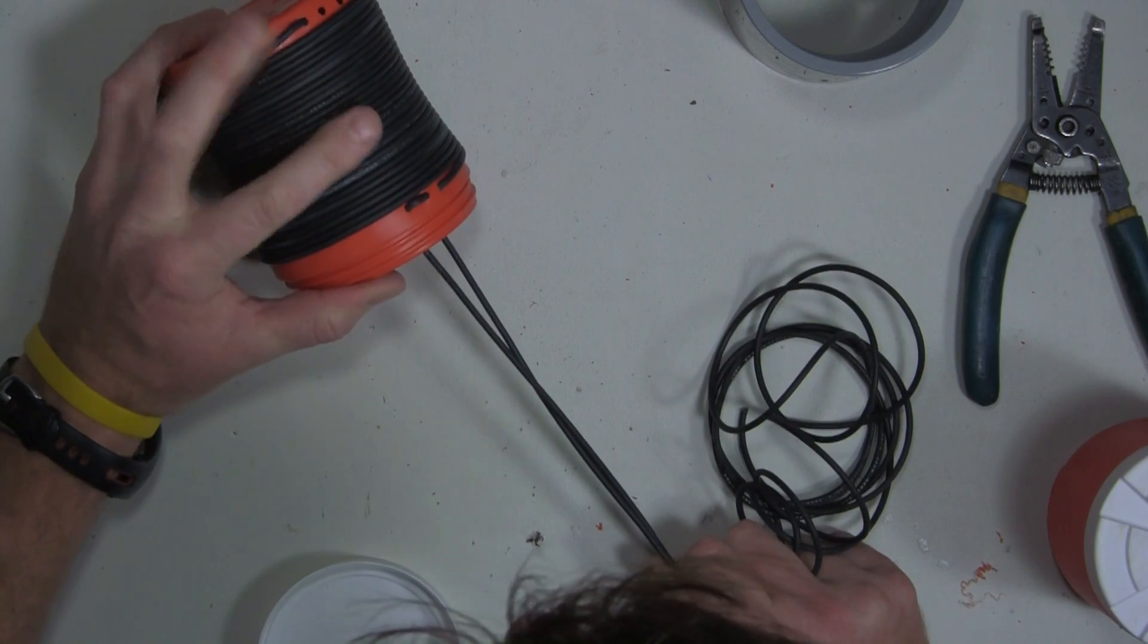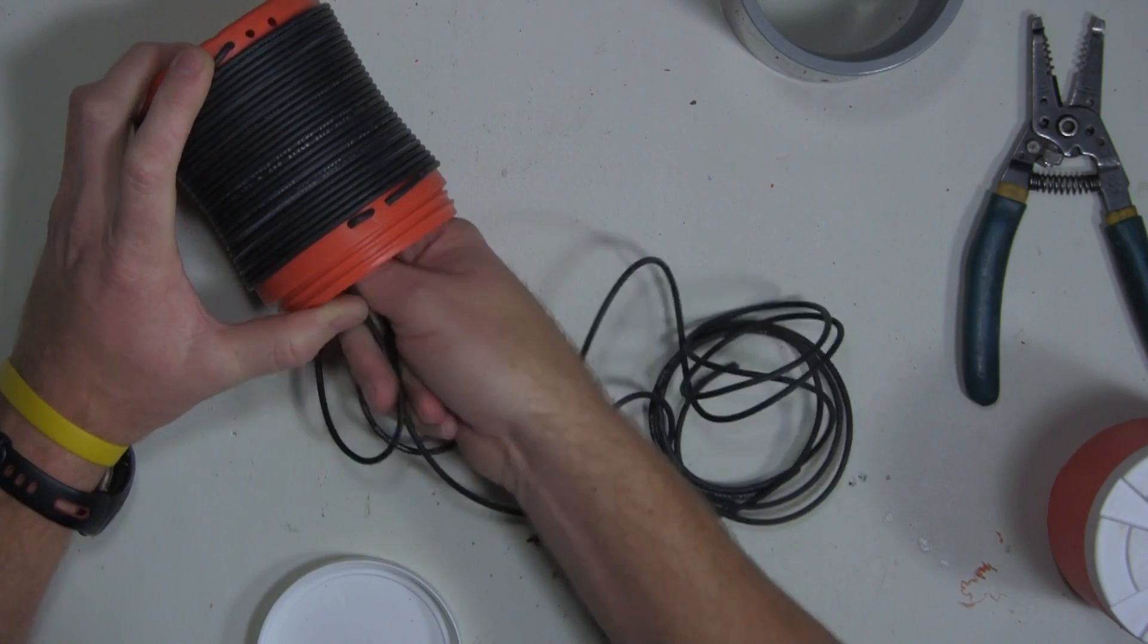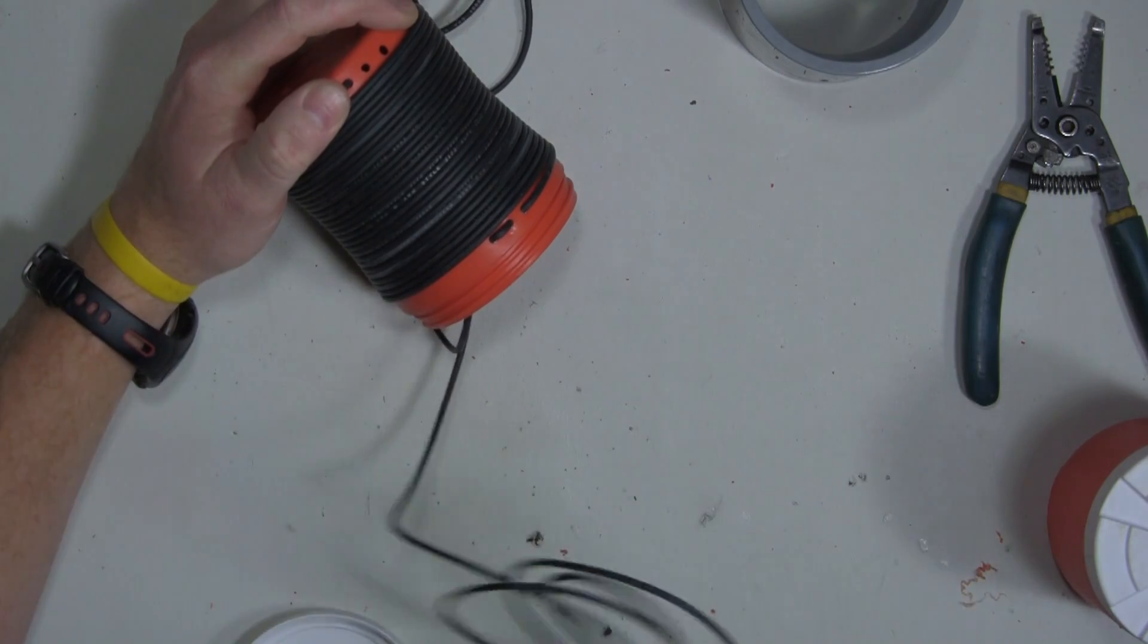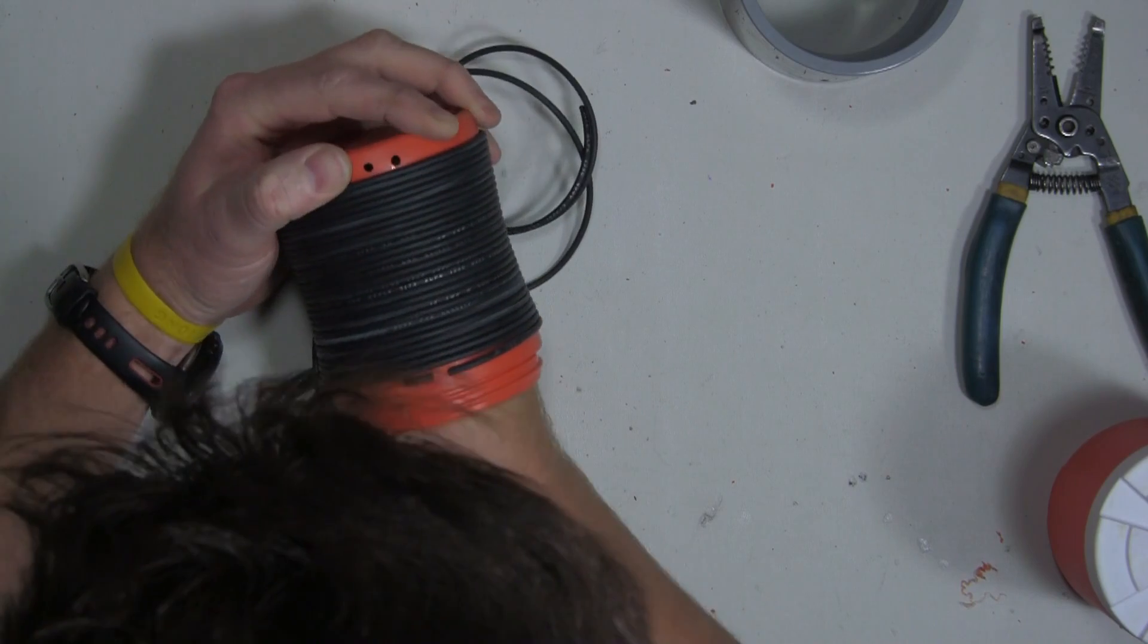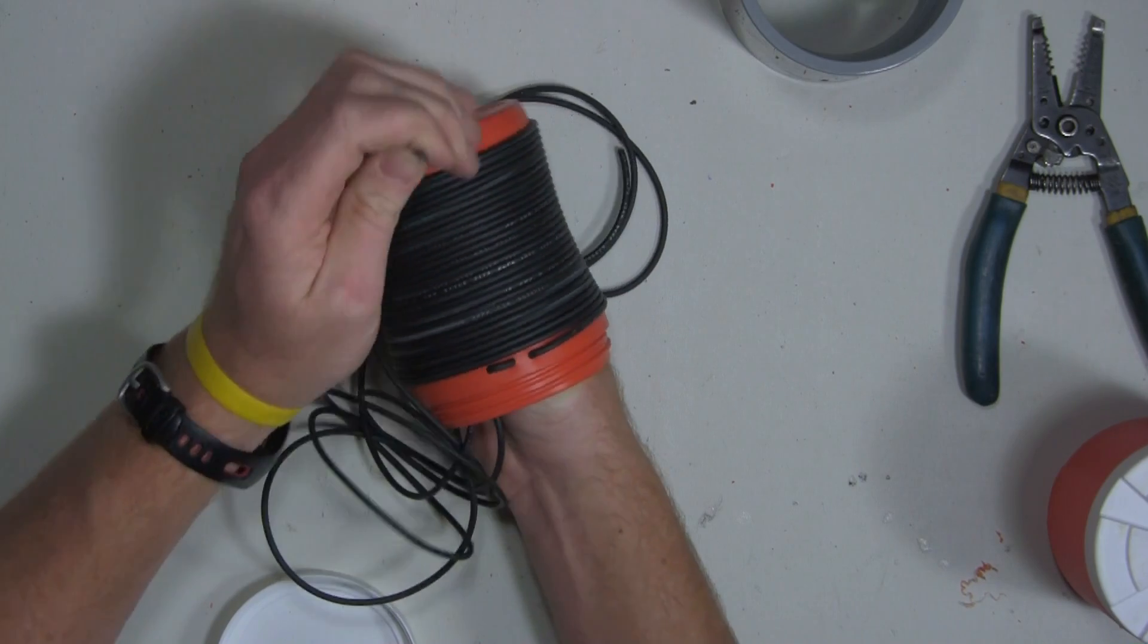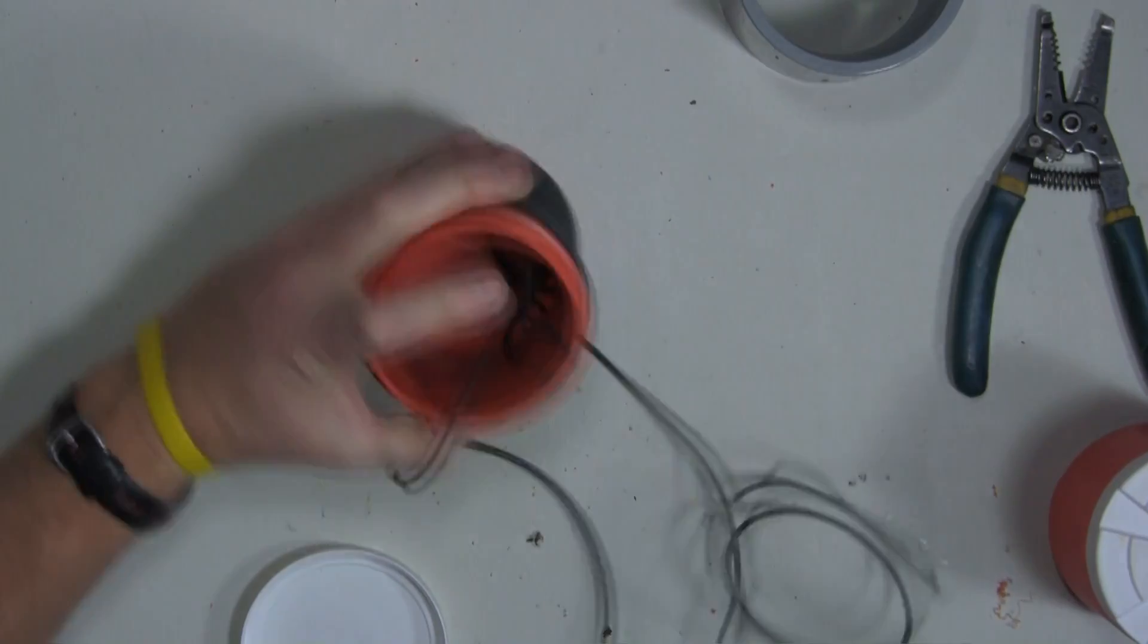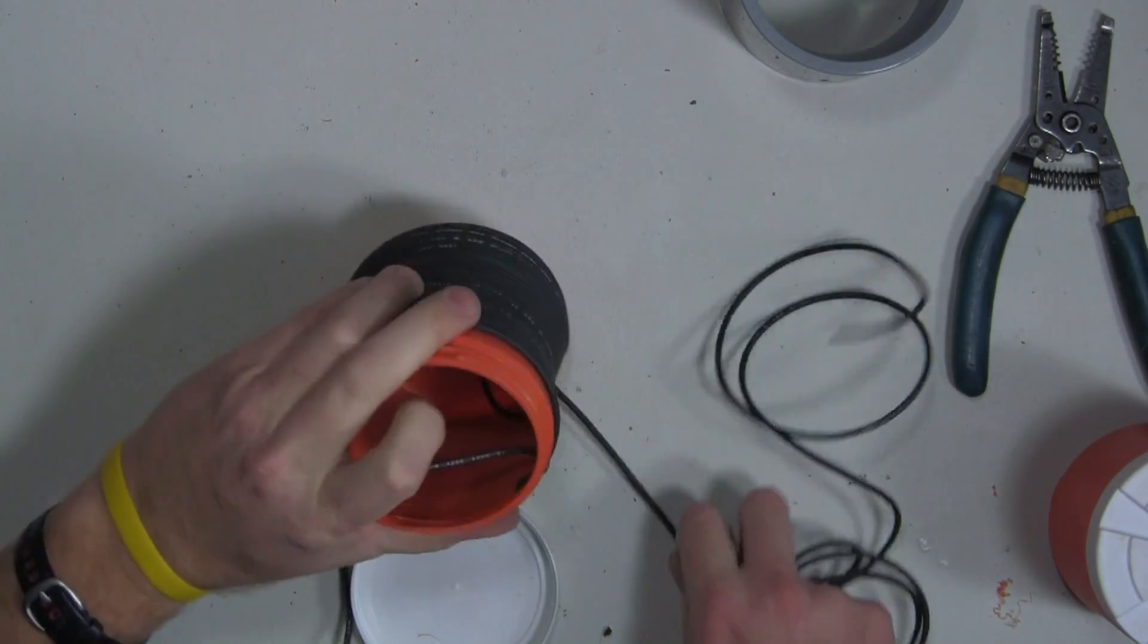But if you put some silicone on that, that should hold that pretty good. And pull that pretty tight. So now with the wire down here at the bottom, you want to feed it back through this hole right here. And, of course, I got this wire looped in there.